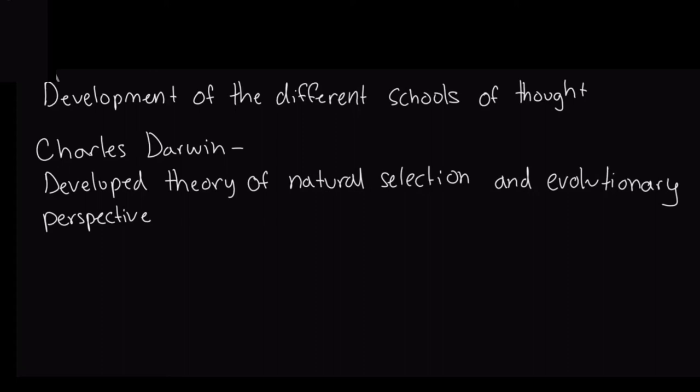Now let's look at the development of the other schools of thought, starting with Charles Darwin, who developed the theory of natural selection and the evolutionary perspective. The evolutionary perspective views the mind as a product of evolution, meaning that each structure provides a function for either survival or reproduction.